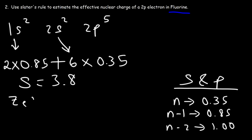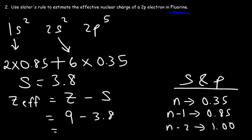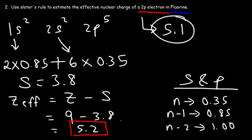Now let's calculate the effective nuclear charge: atomic number of fluorine minus S. The atomic number of fluorine is 9, and S is 3.8, so 9 minus 3.8 is 5.2. This is the effective nuclear charge for a 2p electron in fluorine. The actual value is about 5.1, so 5.2 is a good estimate. When you're dealing with elements with a high atomic number, the estimate begins to deviate more from the actual value.